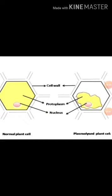The disorder plasmolysis: water moves out of the cell, which results in the shrinkage of the cell membrane. When water comes out of the cell, the cell membrane becomes shrunken.